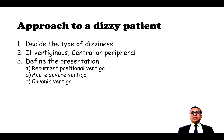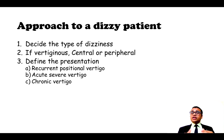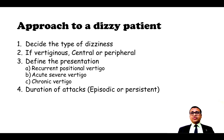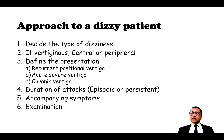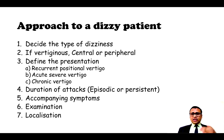Then comes the syndromic presentation — whether it is recurrent positional vertigo, acute severe vertigo, acute vestibular syndrome, or chronic vertigo which could be either episodic or persistent. Then comes the duration of attack. The accompanying symptoms are very important to arrive at a particular diagnosis. Then comes the examination part and the last step is localization — whether it is a central or peripheral vestibular lesion.